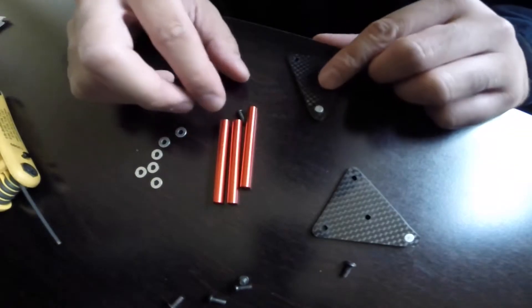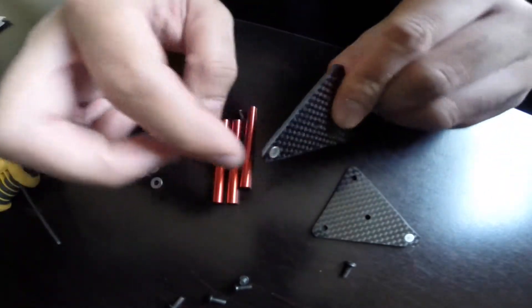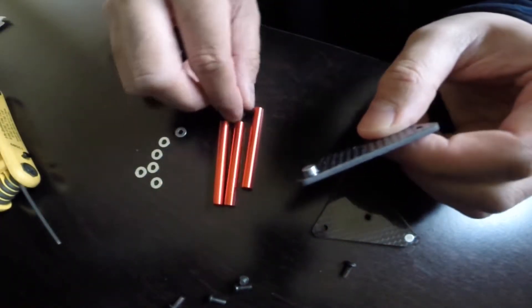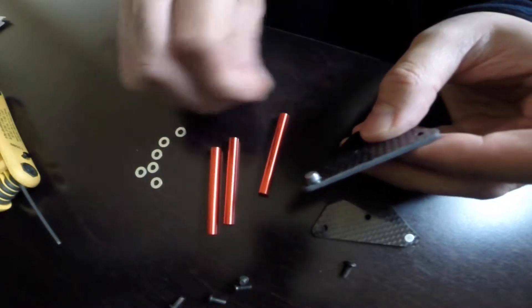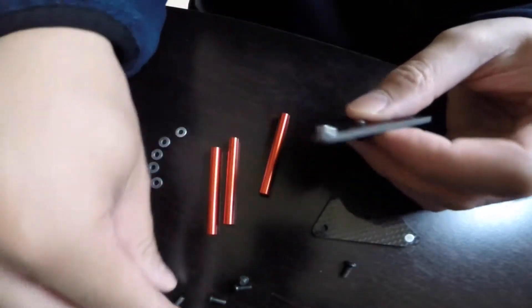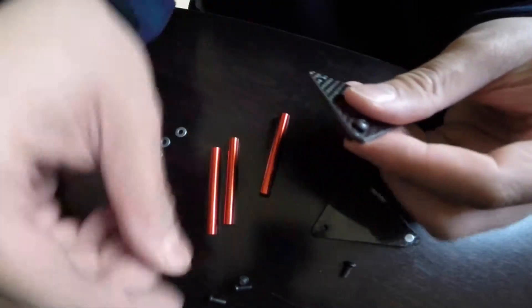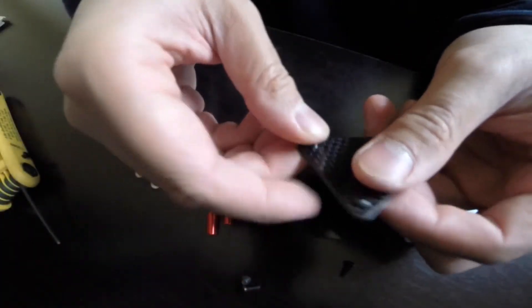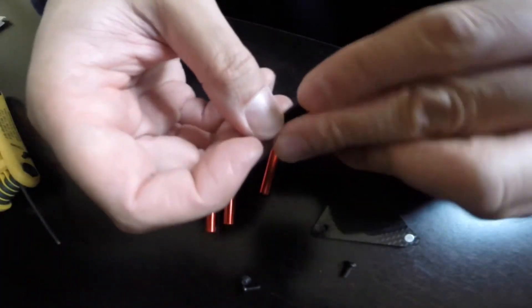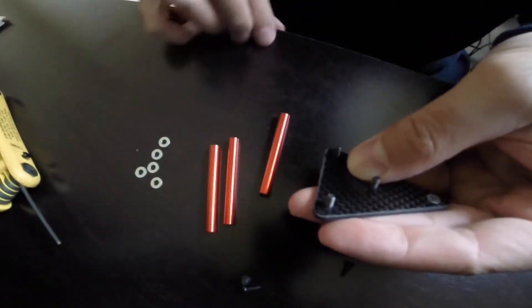So what you're going to want to do here is remember which side the magnets on, that's the inside. So go ahead and grab your screws, a little tricky to get these all on at the same time. Get your washers.